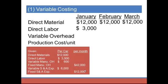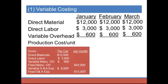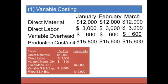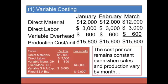Direct labor is $3,000 per car in each of the three months — January, February, and March. Variable manufacturing overhead is $600 per car, so we add that for each of the three months as well. Adding up our variable production costs gives a total cost per unit of $15,600 for January, $15,600 for February, and $15,600 for March. This cost per unit is used to compute cost of goods sold. The cost per car remains constant no matter what sales or production are in a given month — $15,600 under variable costing.